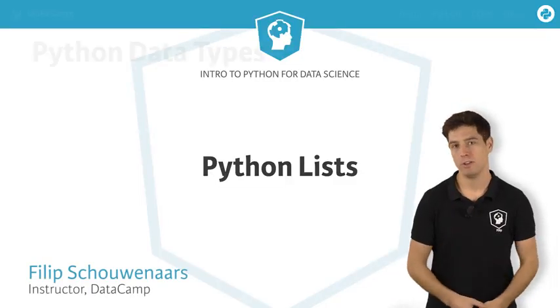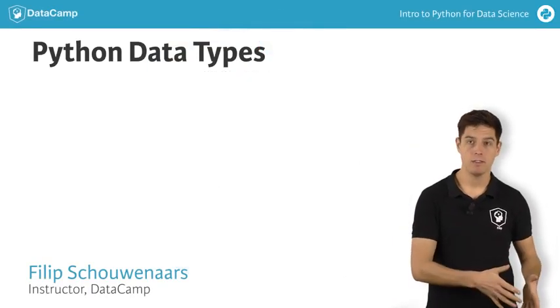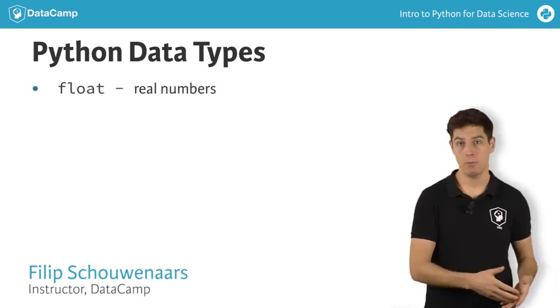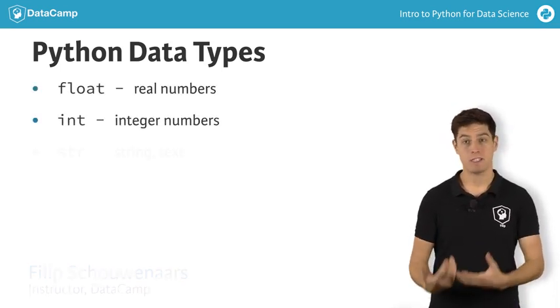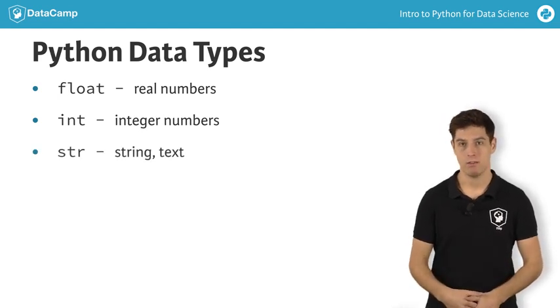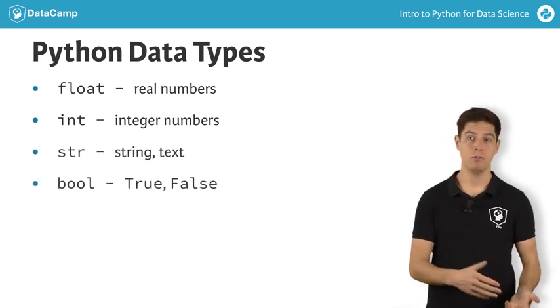By now, you've played around with different data types. On the numbers side, there's a float to represent a real number and the int to represent an integer. Next, we also have str, short for string, to represent text in Python, and bool, which can be either true or false.